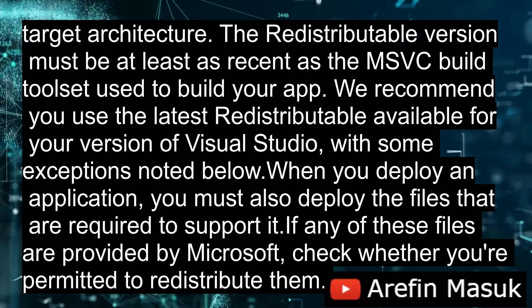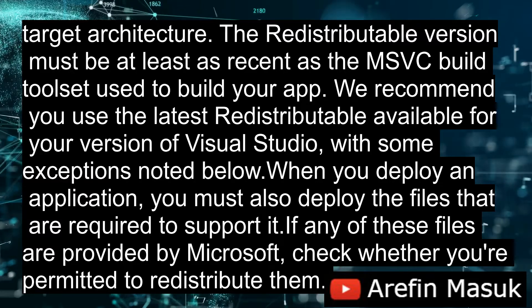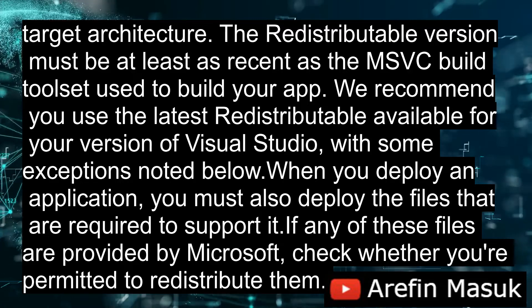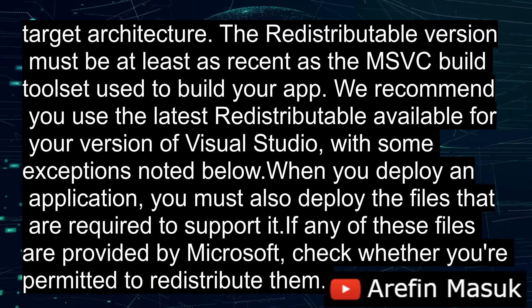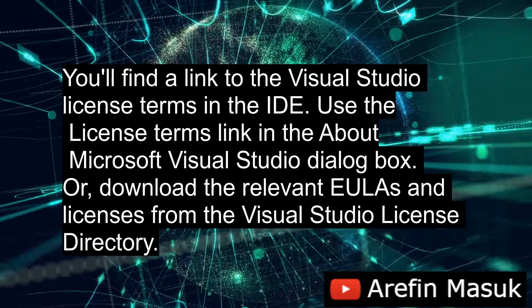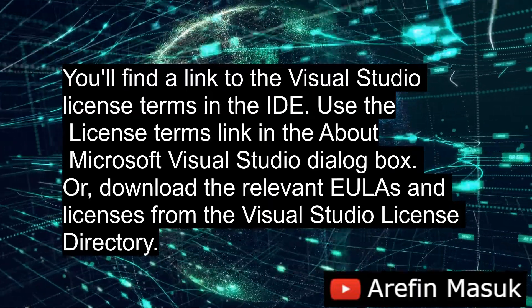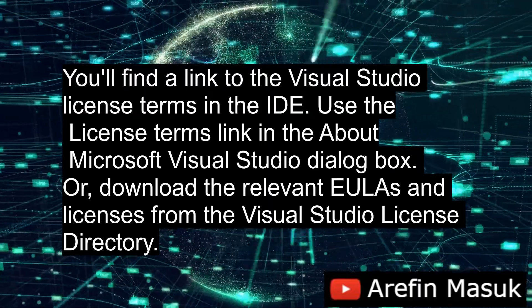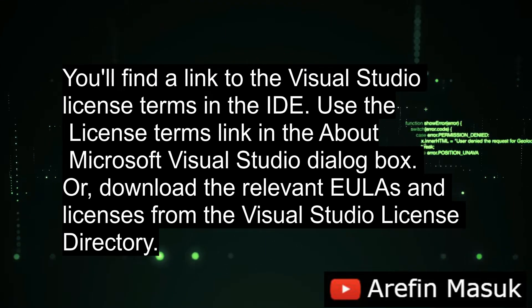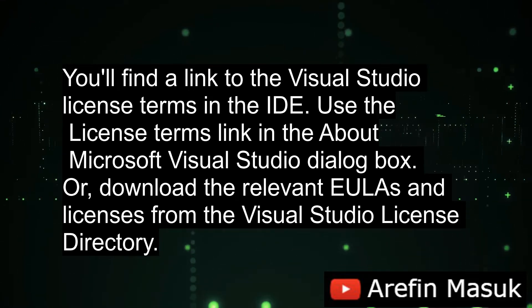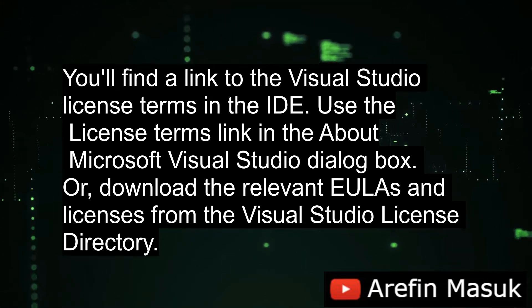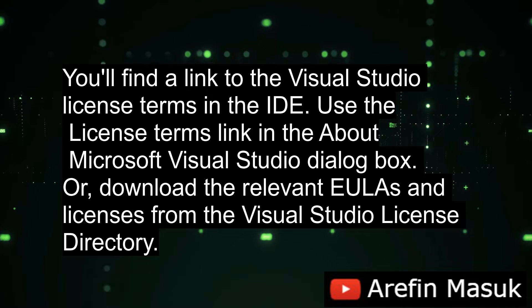When you deploy an application, you must also deploy the files that are required to support it. If any of these files are provided by Microsoft, check whether you're permitted to redistribute them. You'll find a link to the Visual Studio license terms in the IDE. Use the license terms link in the About Microsoft Visual Studio dialog box, or download the relevant EULAs and licenses from the Visual Studio license directory. To view the redist list referenced in the Distributable Code section of the Visual Studio 2022 Microsoft Software license terms, see Distributable Code Files for Microsoft Visual Studio 2022.